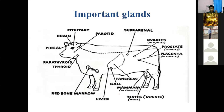The important glands present in the animal body are: first, the pituitary gland with three portions — anterior, middle, and posterior. After that, the suprarenal gland, which is the adrenal gland. Then the parathyroid and thyroid glands. Some reproductive glands include ovaries, testes, and placenta. GI glands include pancreas and the liver/gallbladder. These glands are present at specific positions in the body and have specific actions on body physiology.